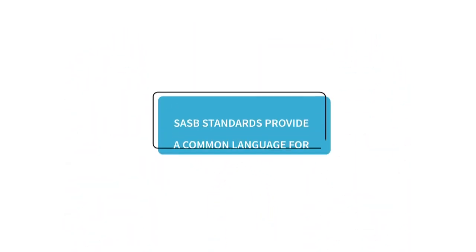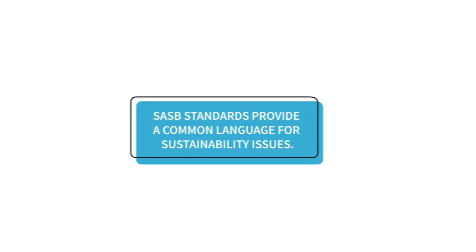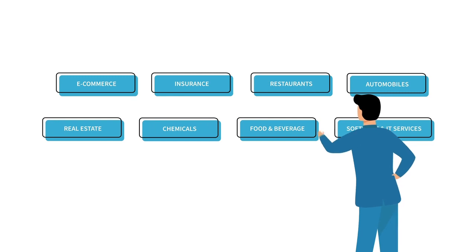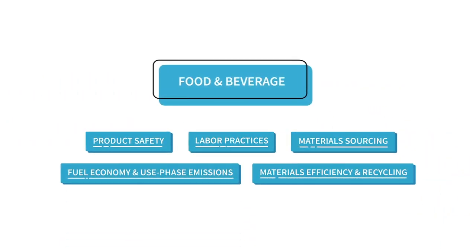SASB standards provide a common language for companies and investors to talk about sustainability issues. Available in 77 industries, they identify the subset of issues that impact the financial performance of each of those industries.